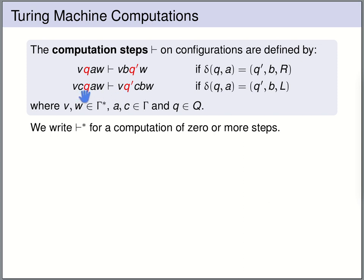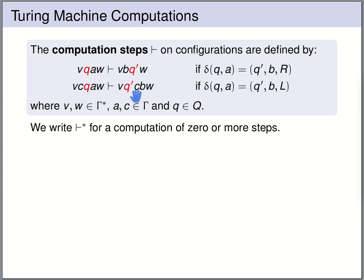If we move to the left: in configuration vcqaw with delta(q, a) = (q', b, L), the state switches to q', the a is overwritten by b, and since we move left, we now stand on c — so in configuration notation, q' stands to the left of c. We also write the turnstile with a star for a computation of zero or more steps.